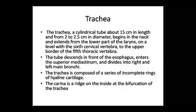The trachea is a cylindrical tube which is 15 cm long and has a 2-3 cm diameter. It extends from the larynx, from the level of the cervical vertebrae down to the 5th thoracic vertebra at the upper border. It descends in front of the esophagus and enters the superior mediastinum, where it divides into the right and left main bronchi. The trachea is made of a series of incomplete rings of hyaline cartilage.